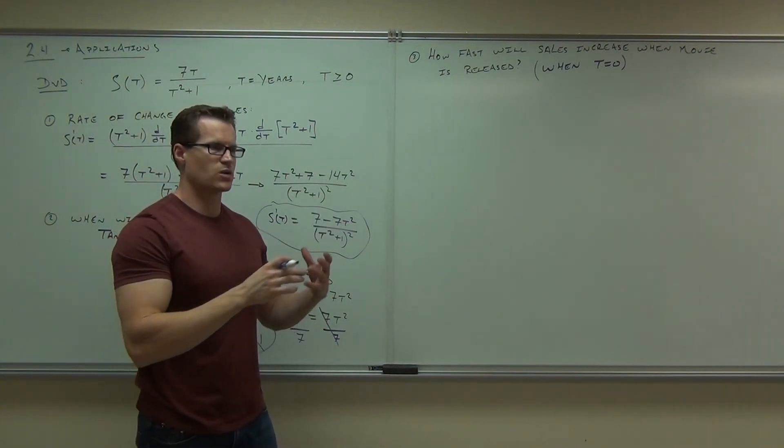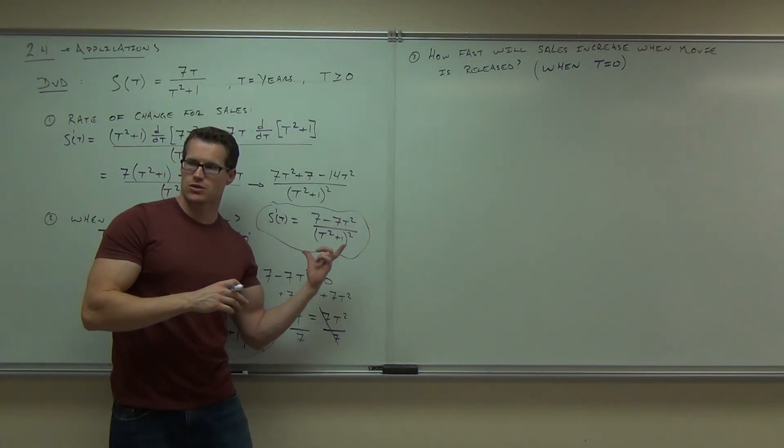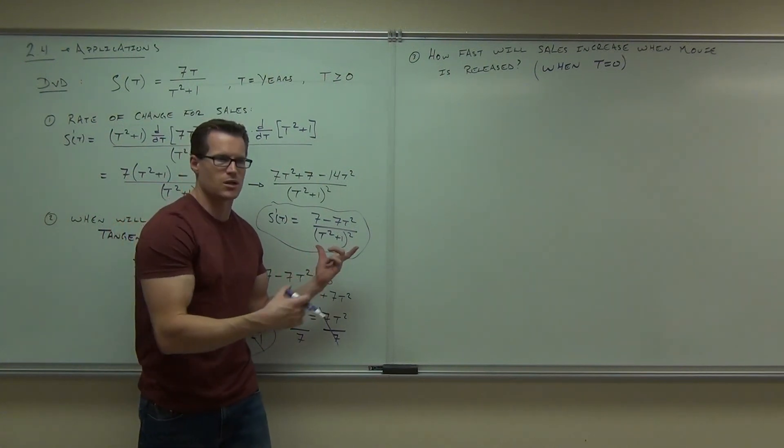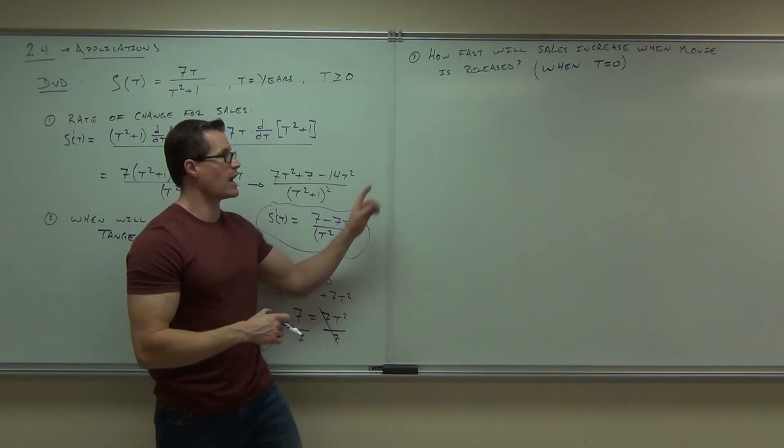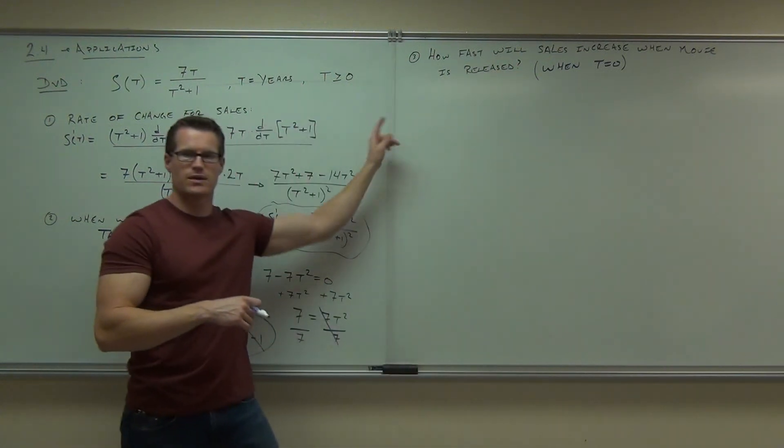How fast? That relates back to our rate of change. So we've already found the rate of change. This is how fast you're climbing or how fast you're falling. That's your slope. That's how fast you're doing something. So this is how fast, and we're asking how fast when t is 0, what do you need to do to figure that question out?